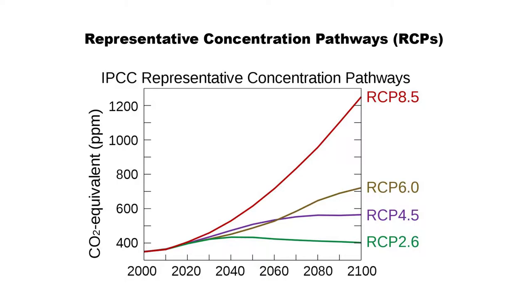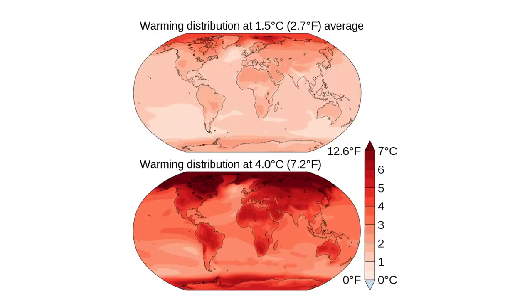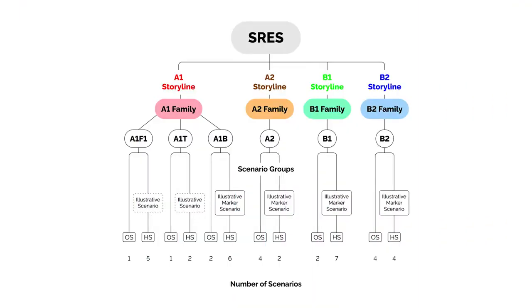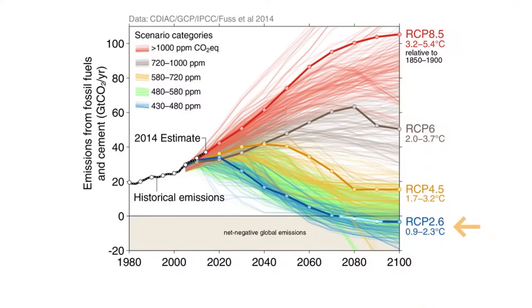The RCPs are the latest iteration of the scenario process and are presented in the IPCC's Assessment Report 5 in preference to the SRES. The SRES scenarios use socio-economic modeling to inform potential emissions trajectories, while the RCP scenarios are specifically named for radiative energy in watts per square meter added to the Earth's climate system by the end of the 21st century.